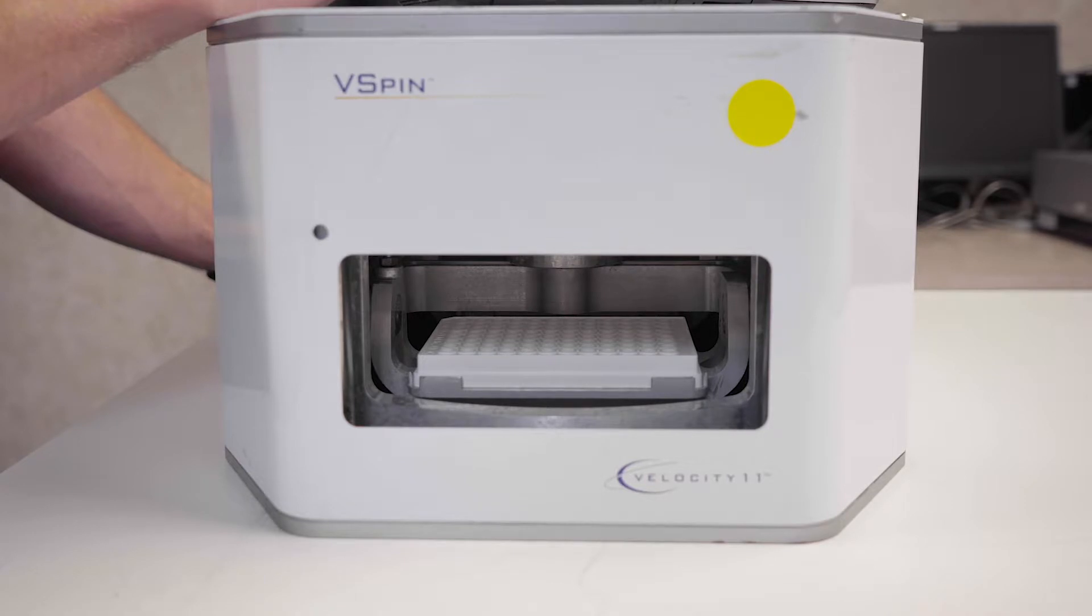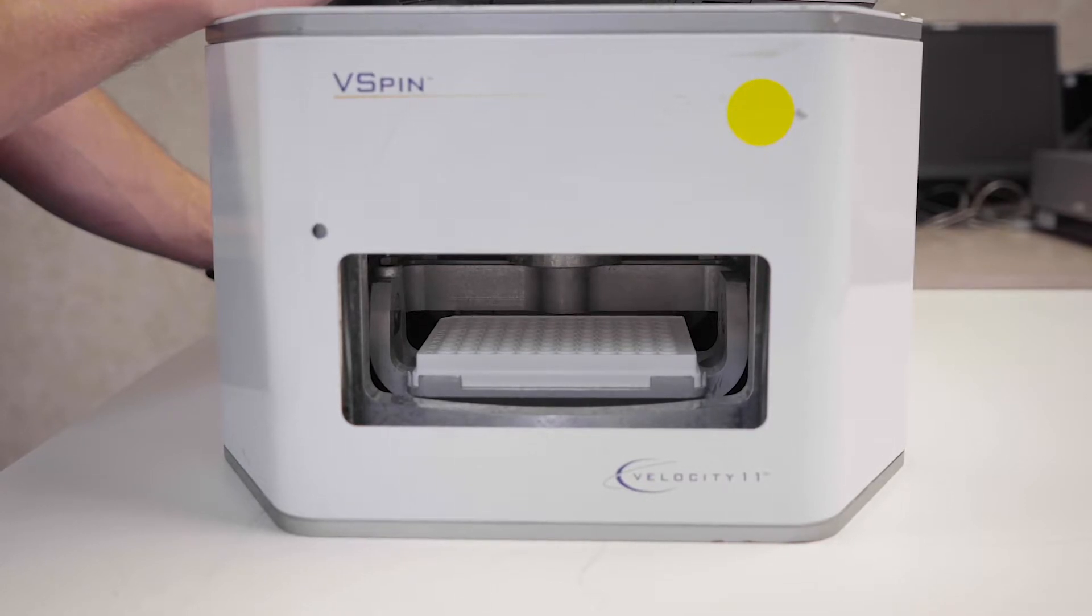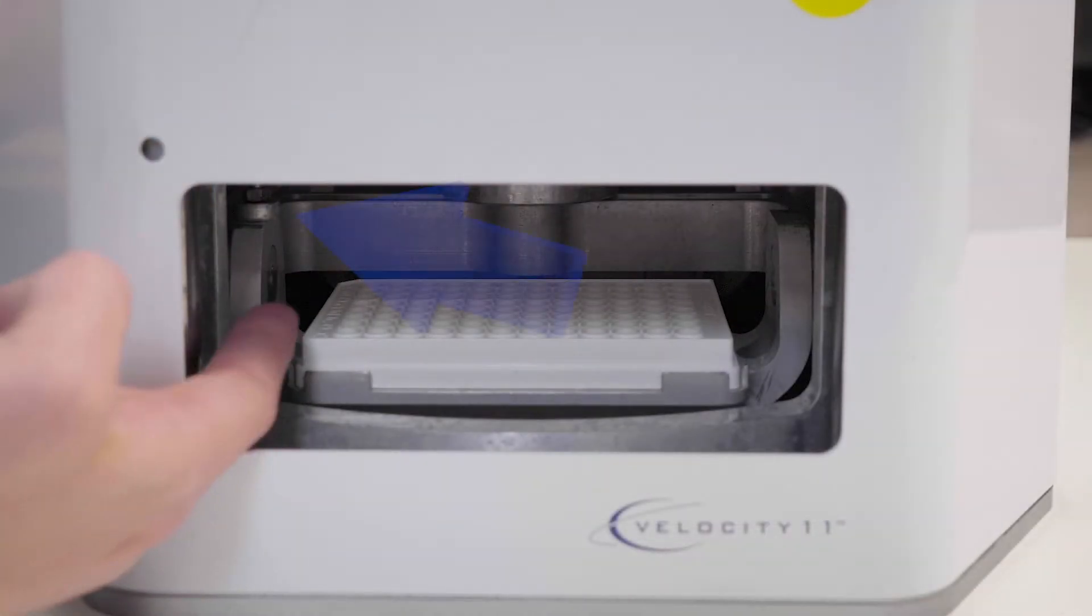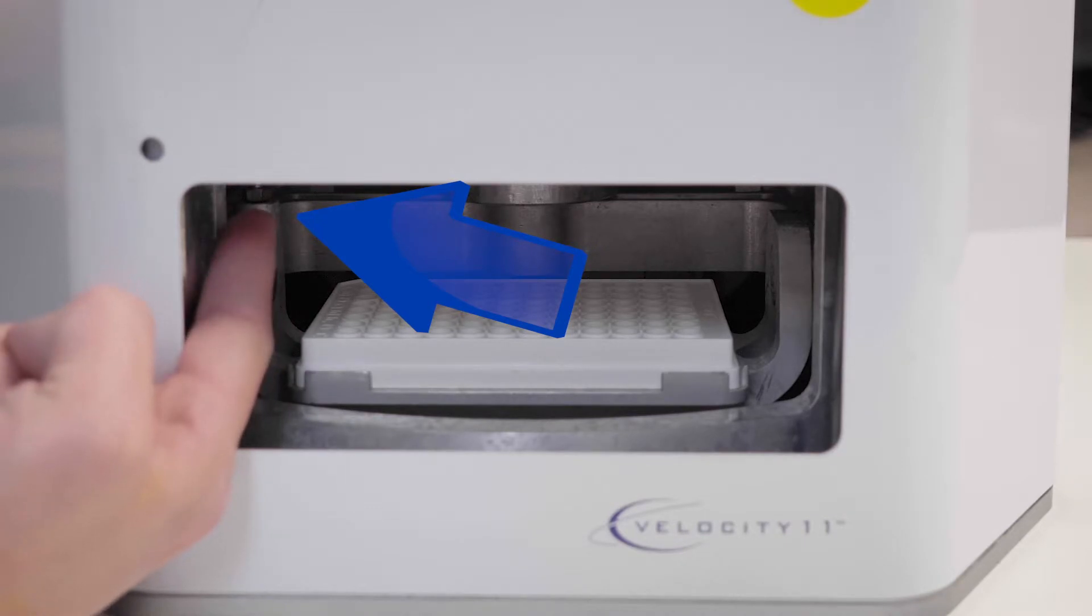When you look at the bucket, it should line up straight in from the door. You can also see the bucket lock alignment on the shoulder of the bucket.